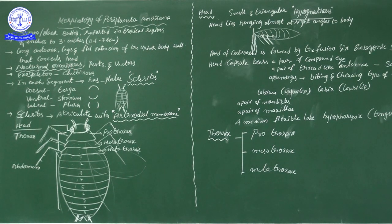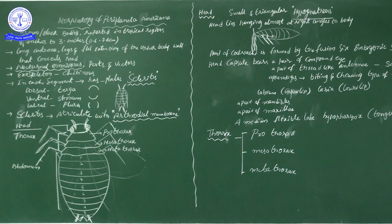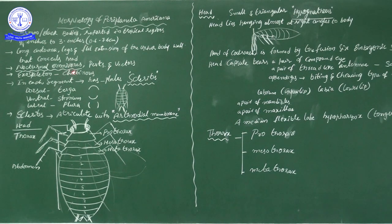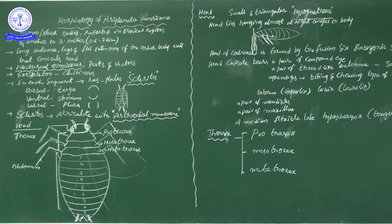Cockroaches are nocturnal and omnivores. Nocturnal means the organism is more active at night — in the daytime they rest, and at night they collect food and resources. Omnivore means they eat all types of food. As we saw in the Digestion and Absorption chapter, human beings are also omnivores — they eat both plant-related and animal-related food items.